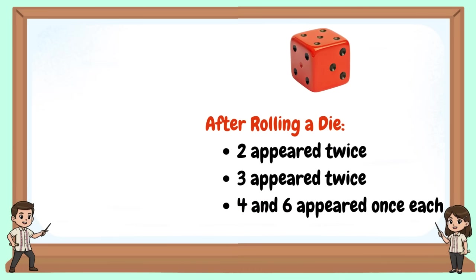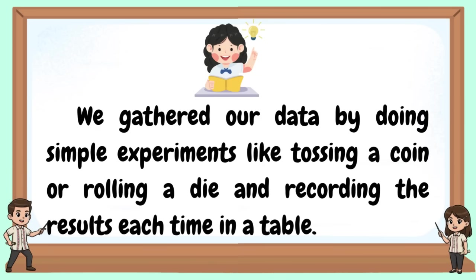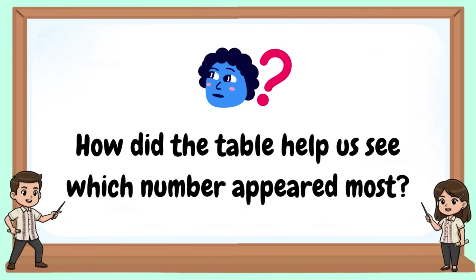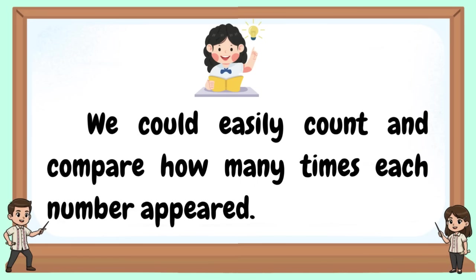After rolling a die, two appeared twice, three appeared twice, and 4 and 6 appeared once each. We gathered our data by doing simple experiments like tossing a coin or rolling a die and recording the results each time in a table. The table helped us see which number appeared most because it organized the data clearly. We could easily count and compare how many times each number appeared.